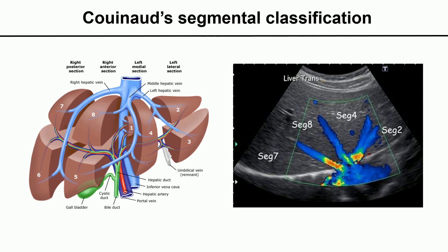The liver has 8 segments divided by the portal vein and the hepatic vein. The left lobe is further divided into medial segment and lateral segments 2 and 3 by the falciform ligament. The right liver is divided into anterior and posterior segments by the right hepatic vein and portal vein.